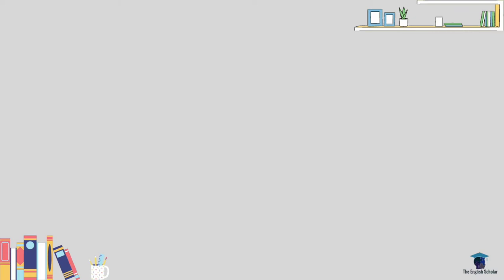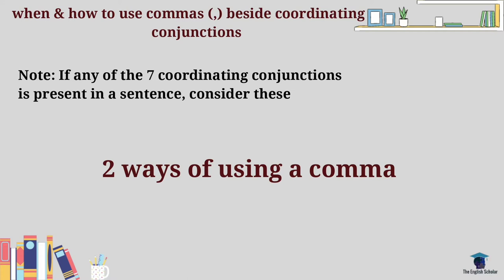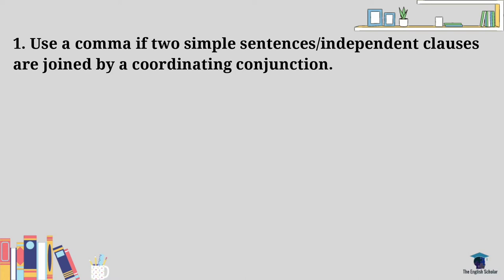As mentioned earlier, we'll learn how to use commas beside coordinating conjunctions. In this case we have two ways of using commas. First, we use commas if two simple sentences or independent clauses are joined by a coordinating conjunction.